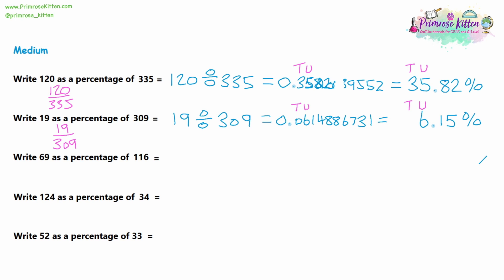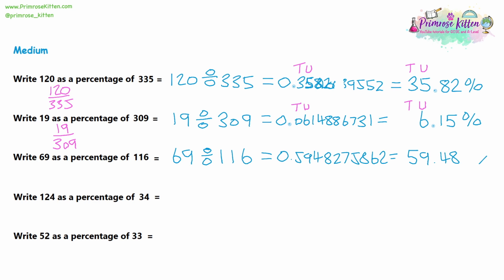Question 3 — write 69 as a percentage of 116. We type 69 divided by 116 into a calculator and get 0.5948275862. The first two decimal places give us 59% for the tens and units, and adding two decimal places gives 59.48%. So 69 is 59.48% of 116.